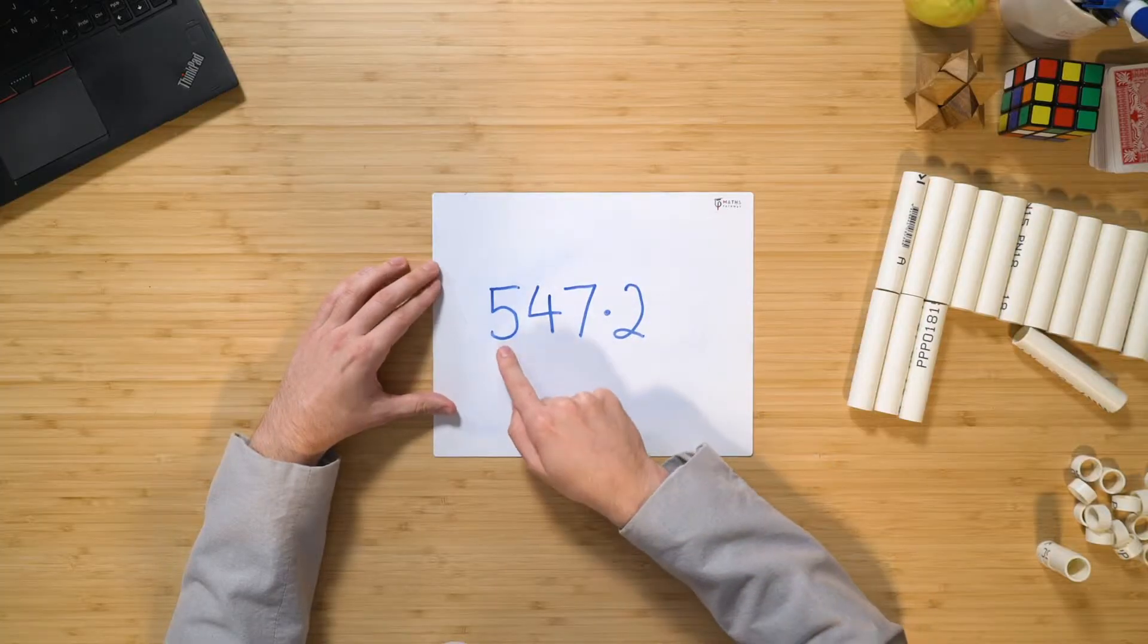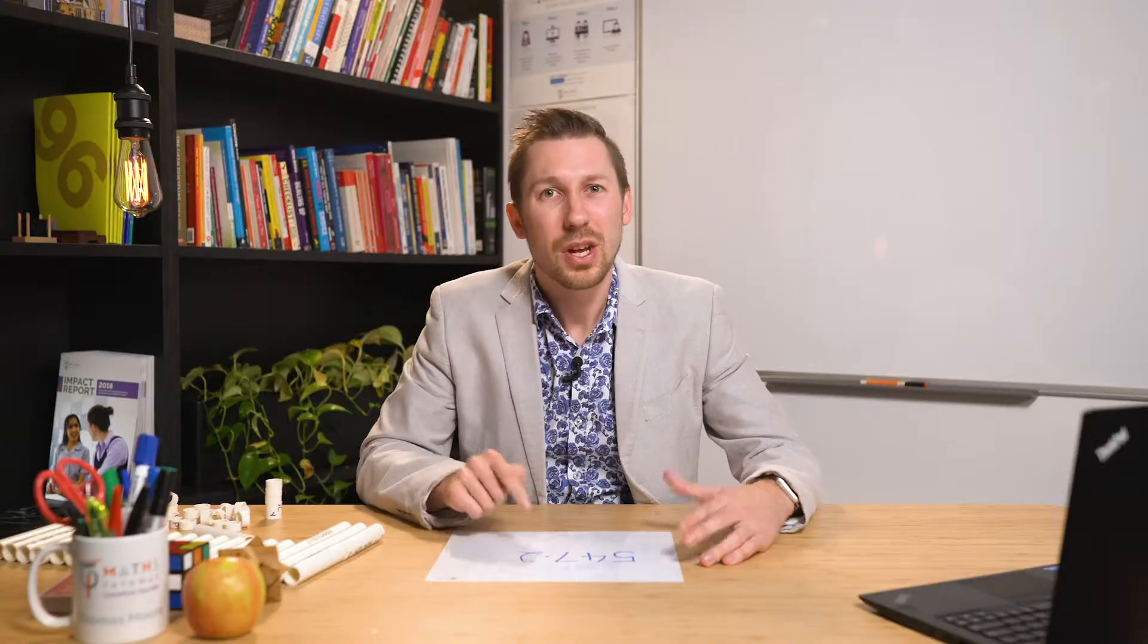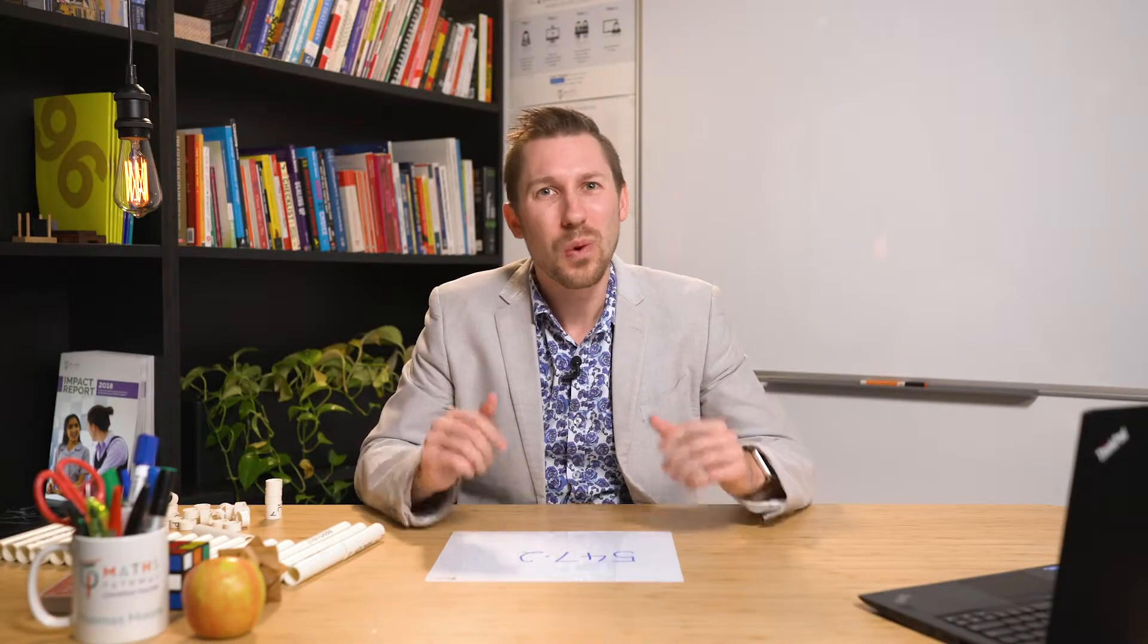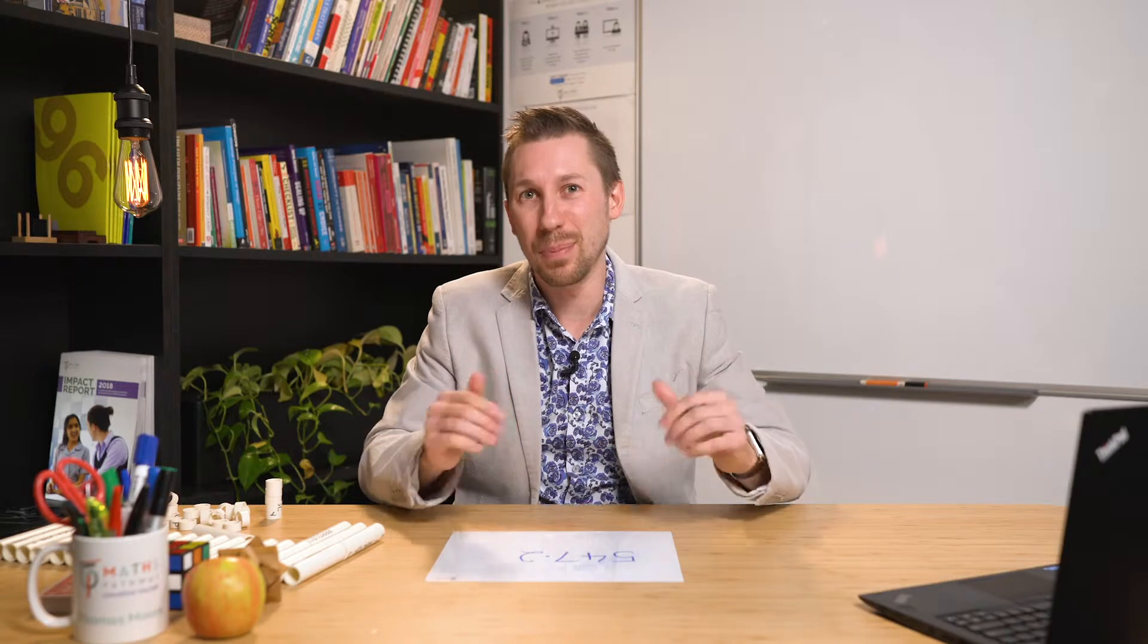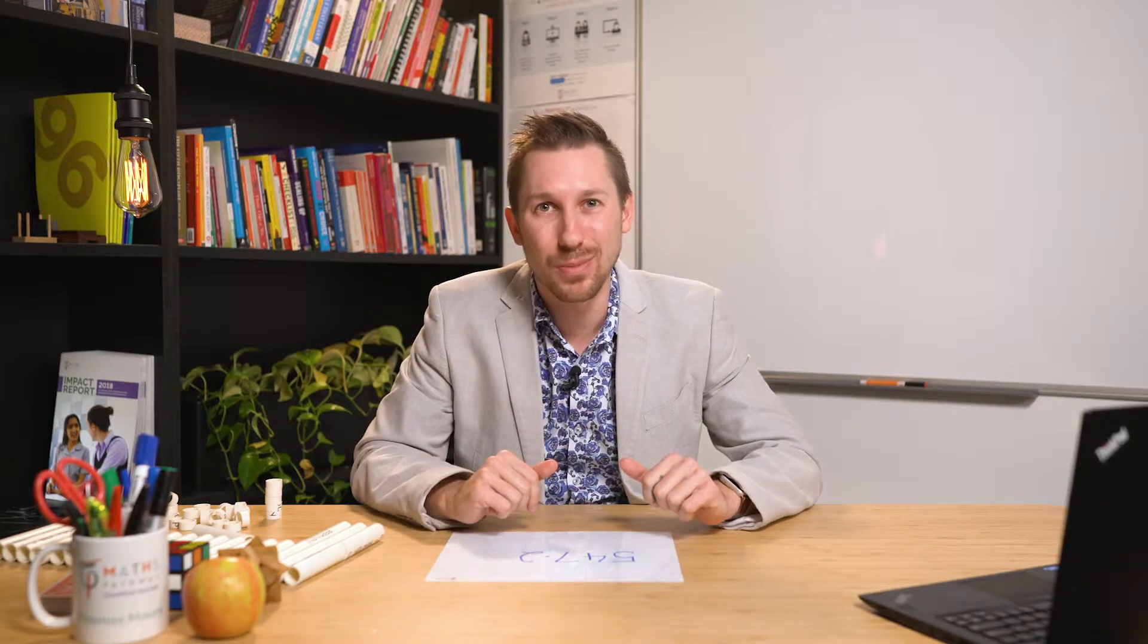So we really have 500, 40, seven and two tenths. So when we talk about it like that, we're really taking into consideration the place value. And it's this that's extremely important when teaching how to both add and multiply decimal numbers.